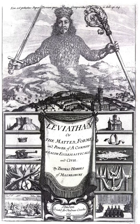Many human societies have been governed by states for millennia; however, for most of prehistory people lived in stateless societies. The first states arose about 5,500 years ago in conjunction with rapid growth of cities, invention of writing, and codification of new forms of religion. Over time, a variety of different forms developed, employing a variety of justifications for their existence such as divine right and the theory of the social contract. Today, the modern nation-state is the predominant form of state to which people are subject.